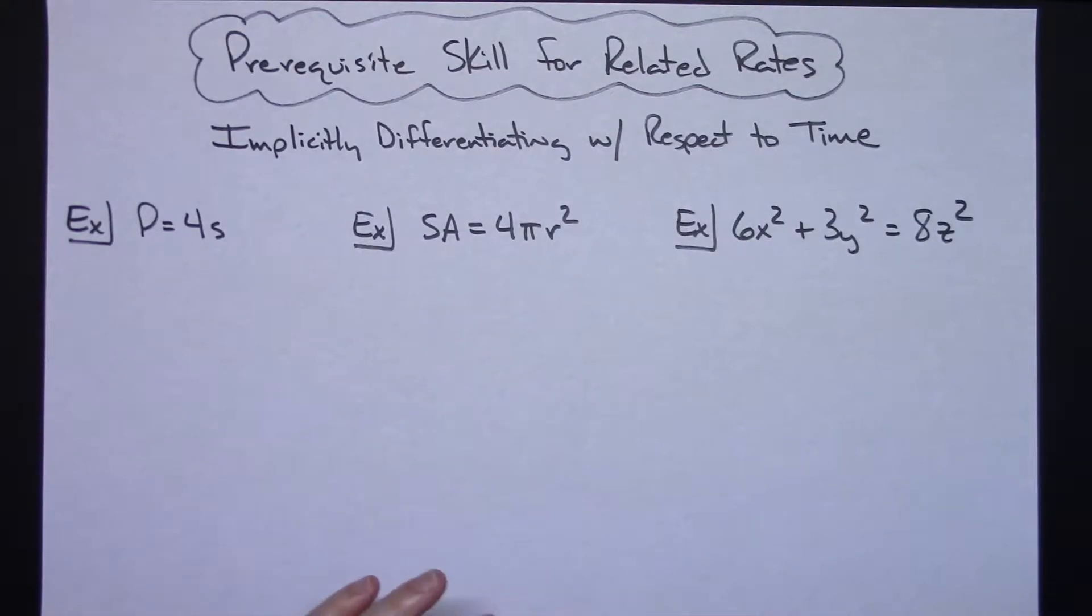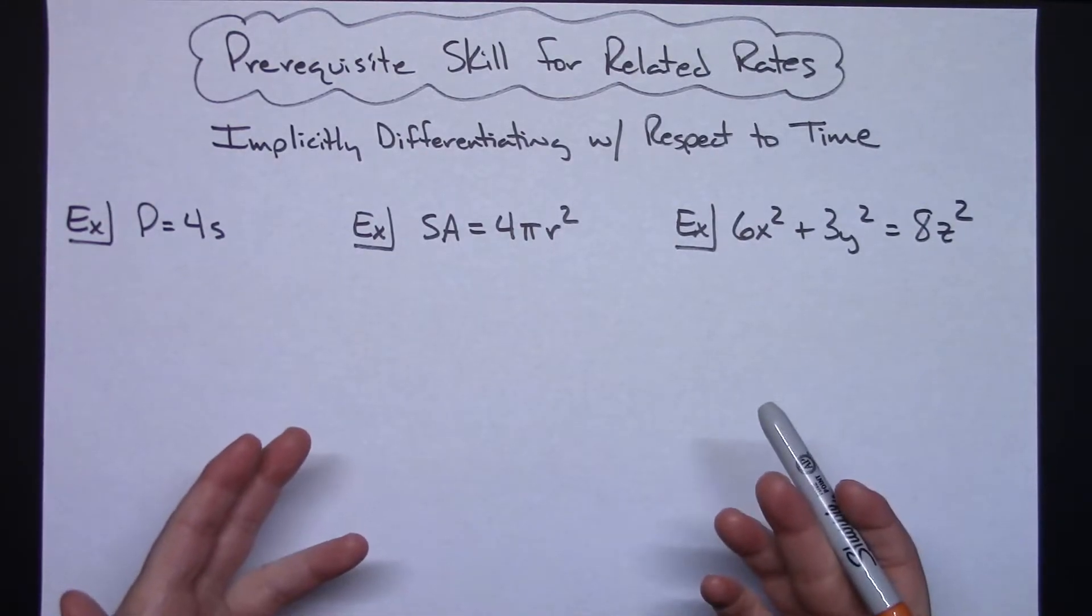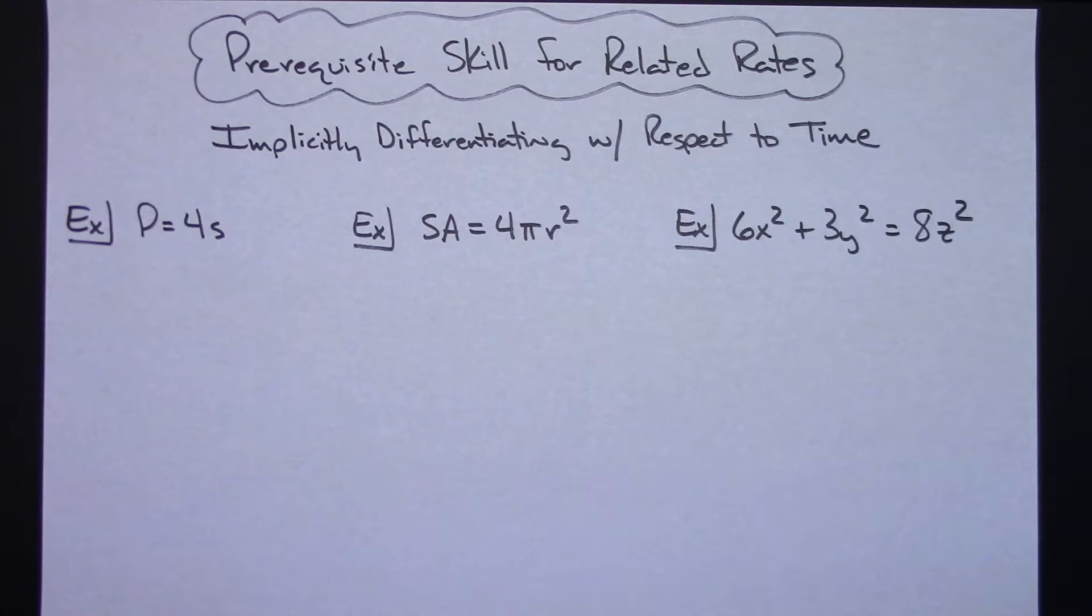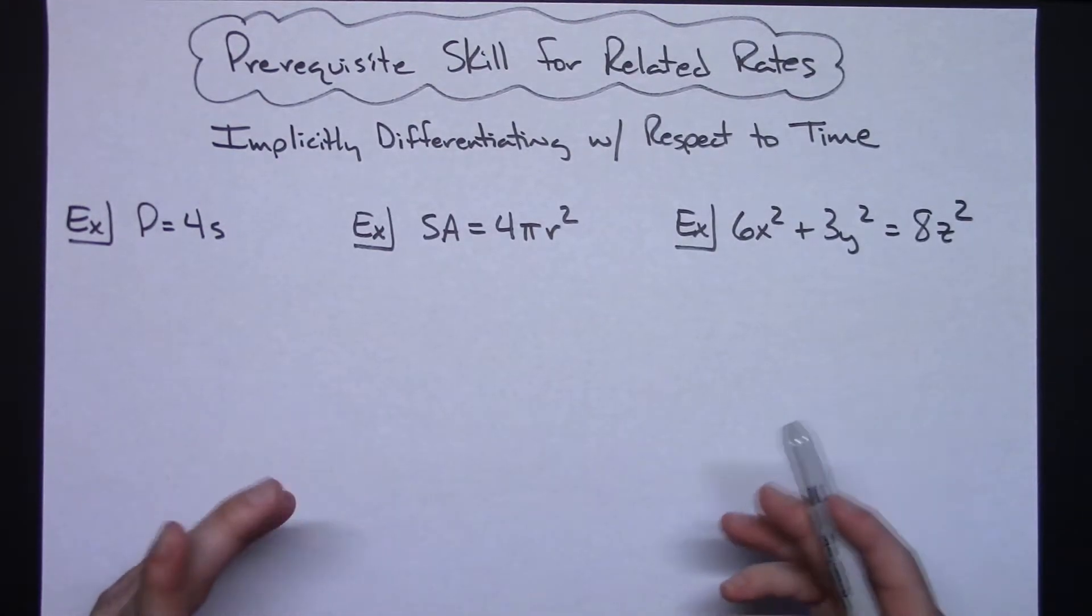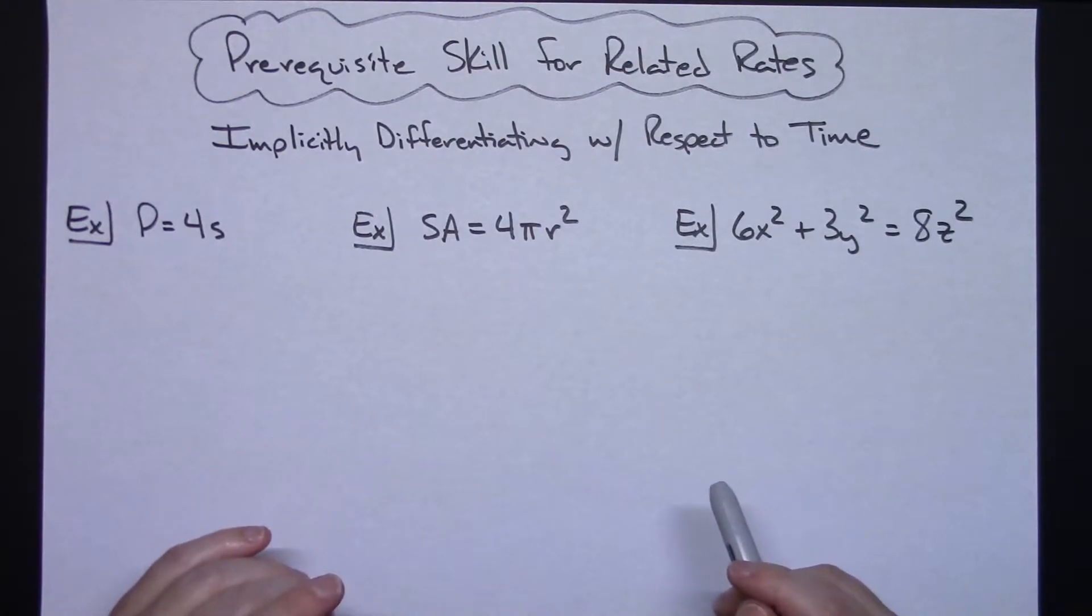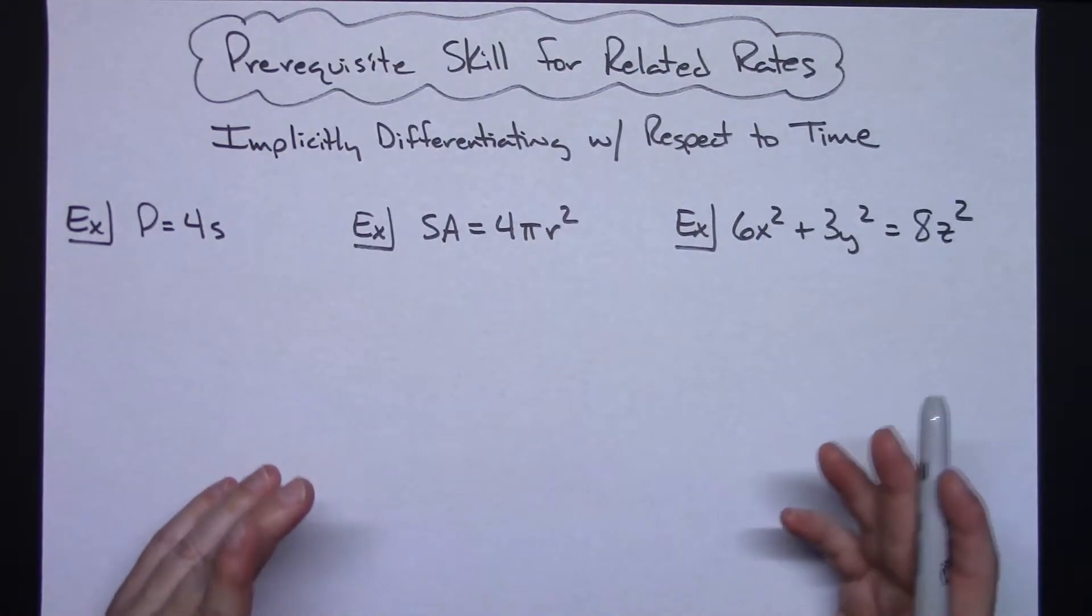In this video I'm going to be focusing on a prerequisite skill that is essential for being able to complete a related rates problem in calculus. Basically, a related rates word problem that you encounter in calculus is just a word problem where we're asked to find the rate of change of some variable given the rate of a different variable.